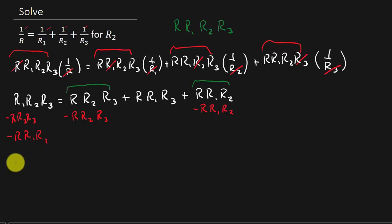And so this is going to leave me with R1, R2, R3 minus R, R2, R3 minus R, R1, R2. Alright, see, I get this term minus this term minus this term. That's this part right here. Alright. And this is equal to, well, I'm just left with this one over here on the right hand side: R, R1, R3.